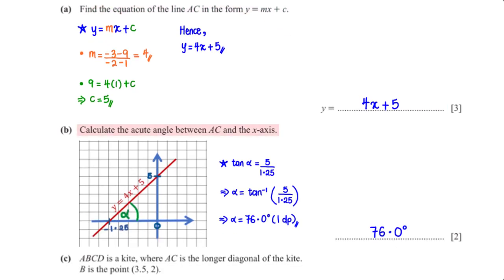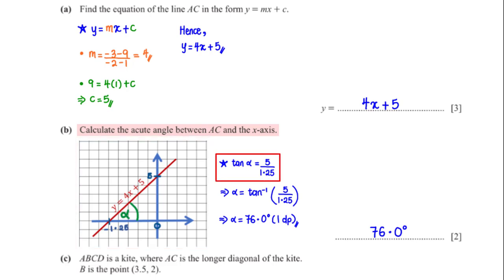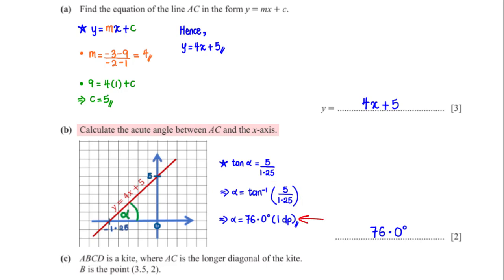Calculate the acute angle between AC and the x-axis. At the point where the line crosses the x-axis, y = 5; where it crosses the y-axis, x = negative 1.25. Applying SOHCAHTOA to the triangle gives sin(α) = 5 over 1.25. Solving for α, we get 76.0 degrees, rounded to one decimal place.